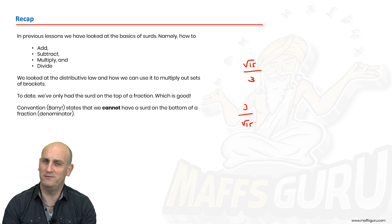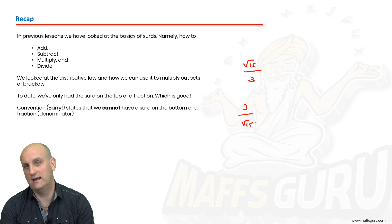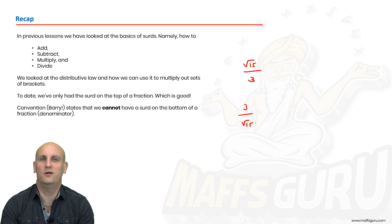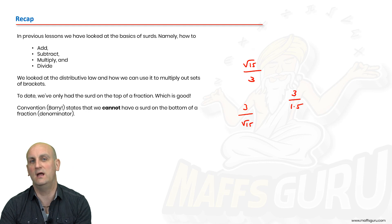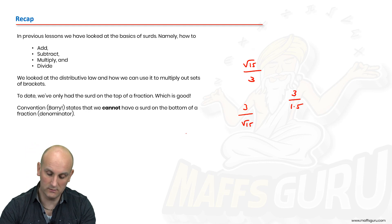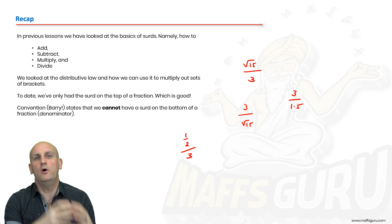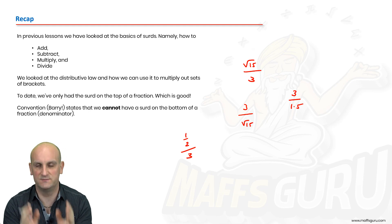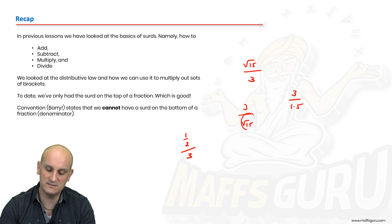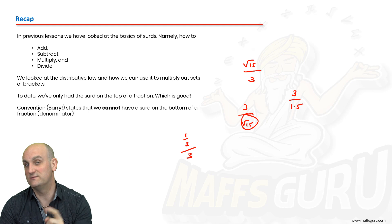Now convention, and by that we read, Barry states that we are not actually allowed to have a square root sign on the denominator of a fraction. They're going to try and say, why? Who knows? And to be honest with you, who really cares? In the same way as if I couldn't have 3 divided by 1.5, right? We know that we cannot have fractions and decimals mixed together. The same is true now when we start to introduce surds. So whenever we see a root sign on the bottom of a surd, we're going to have to take some steps to get rid of it.